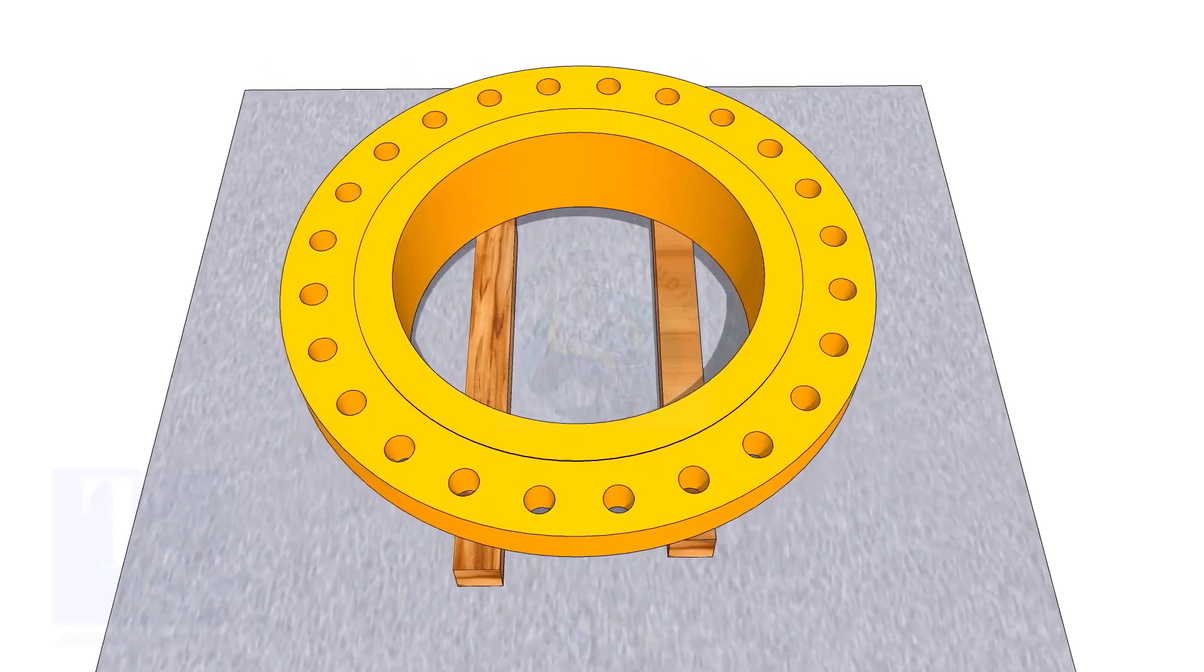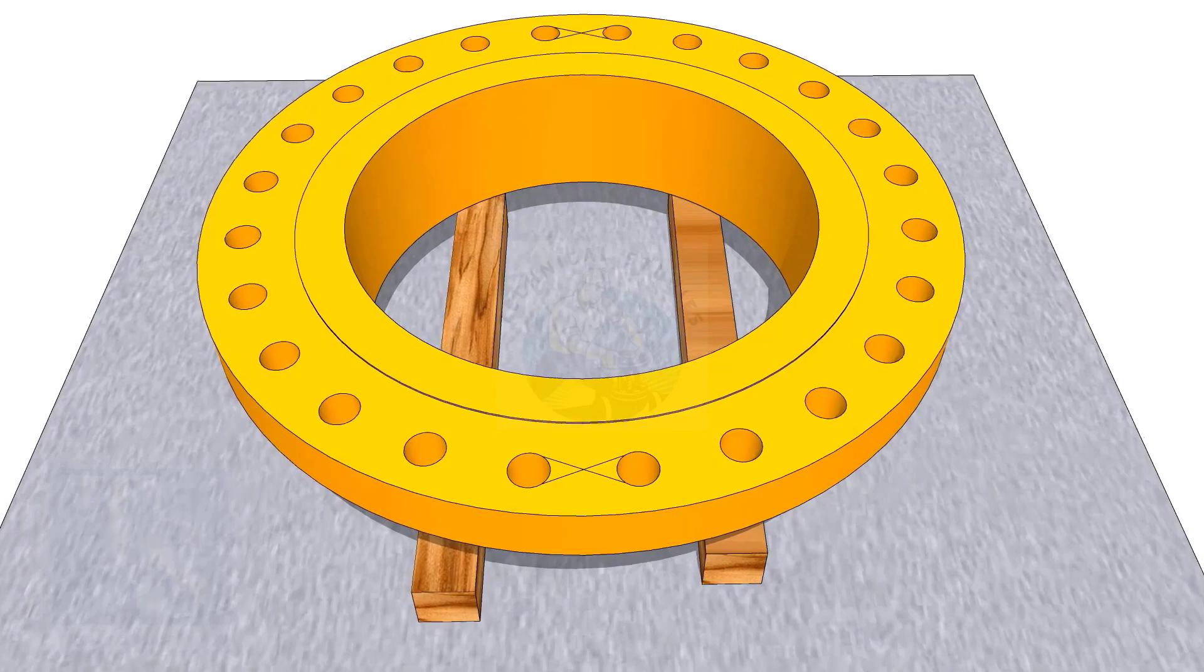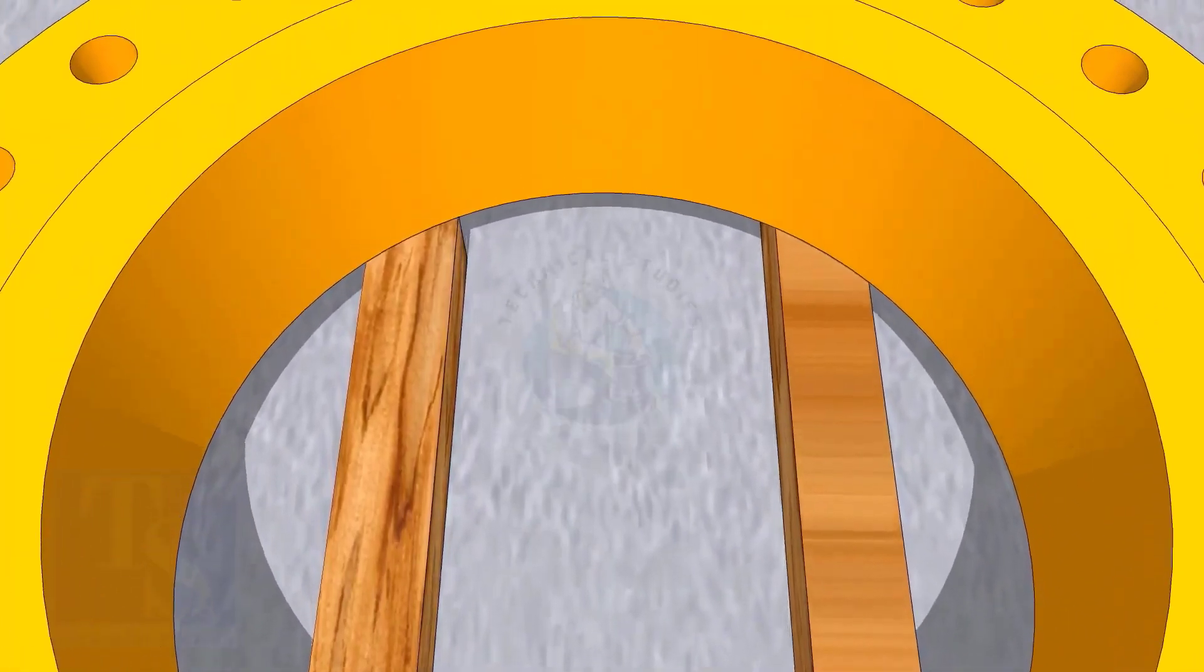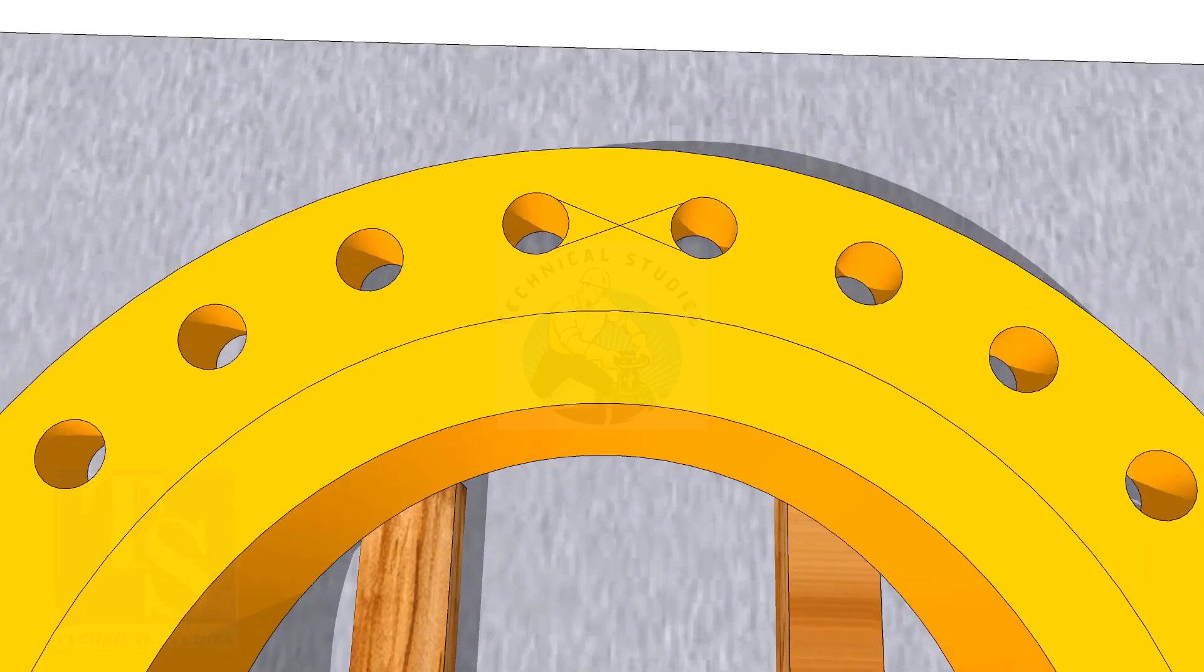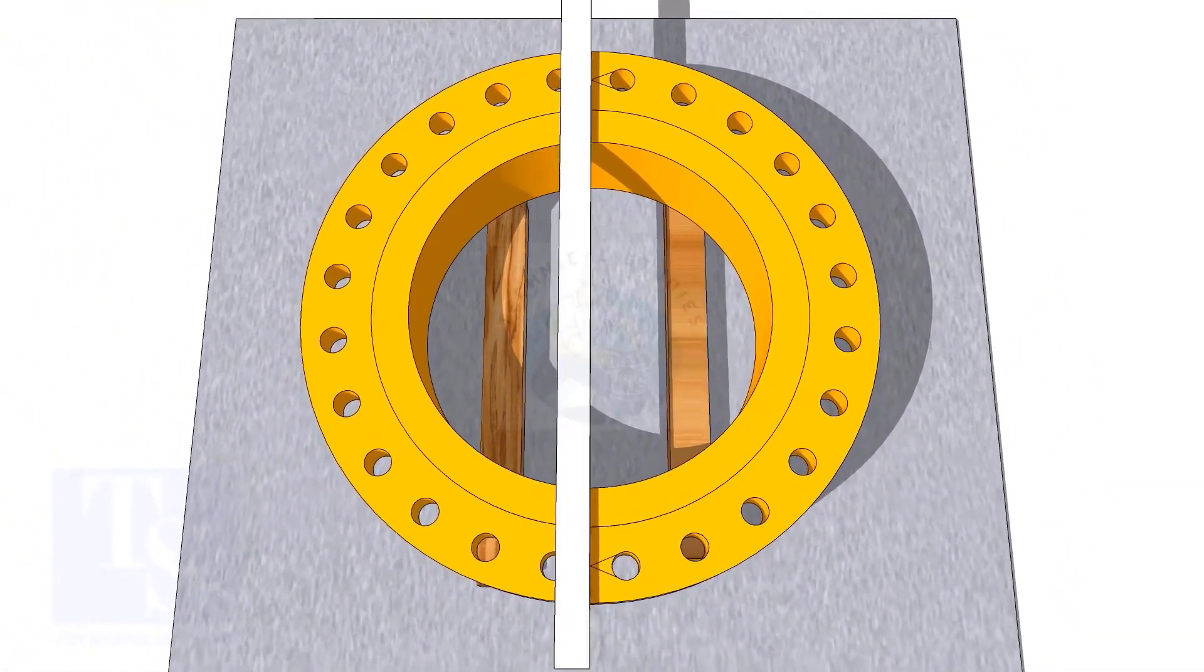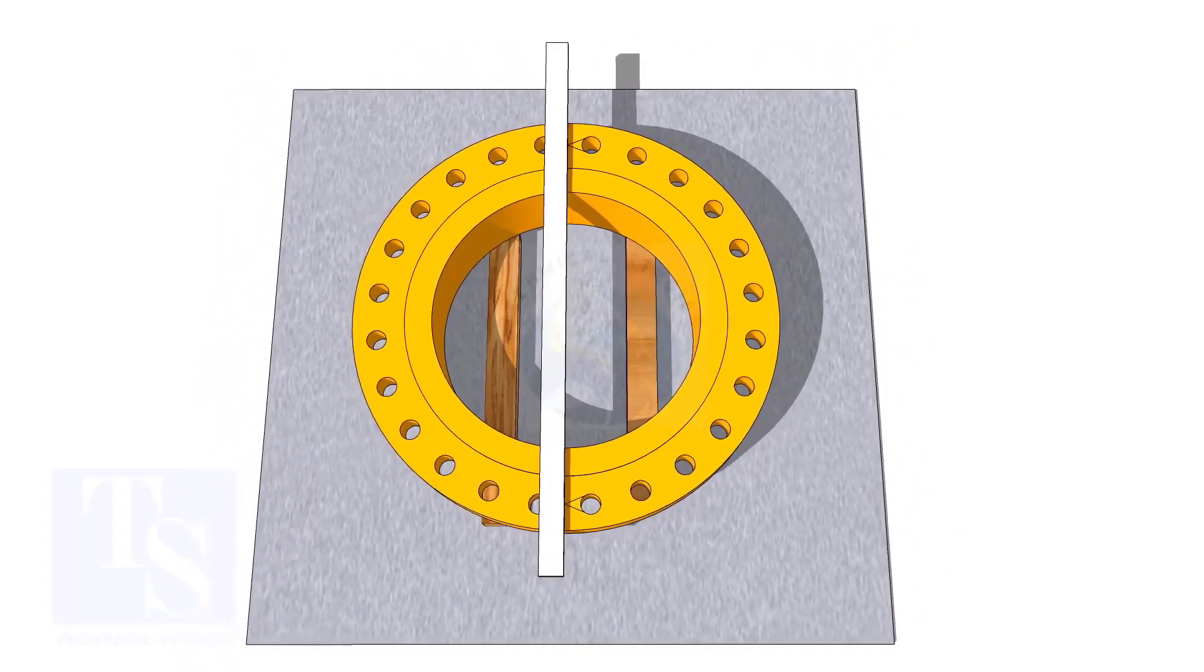In my previous videos, many times I had shown how to mark the center line of a flange. I am showing this scene again for the new viewers. Draw the center line of the flange and transfer it to the sides, as shown.